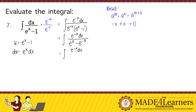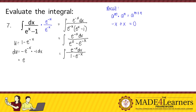So we have e to the power of negative x dx over 1 minus e to the power of negative x, since any number raised to the power of 0 is just equal to 1. Now we can perform integration by substitution. If we let u be equal to 1 minus e to the power of negative x, then finding its differential: the differential of 1 is 0, and negative e to the power of negative x times the differential of the exponent negative 1 dx gives us e to the power of negative x dx equals du. We can substitute, so that this becomes du over u, and the integral of du over u is equal to ln of u plus c.